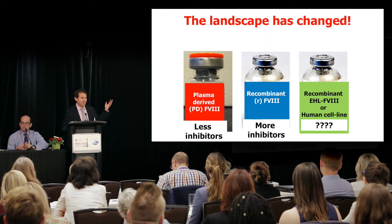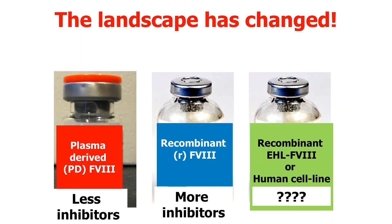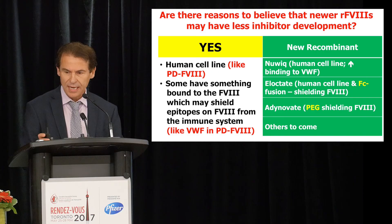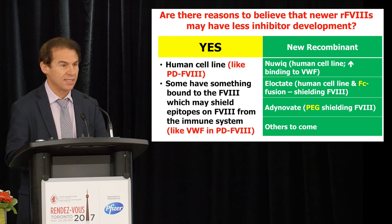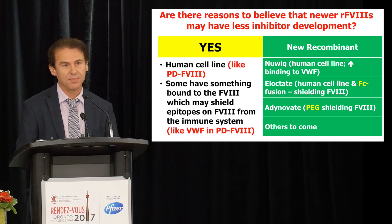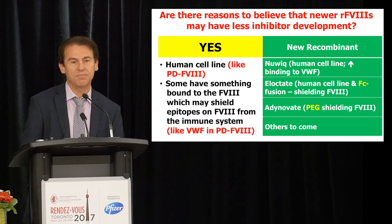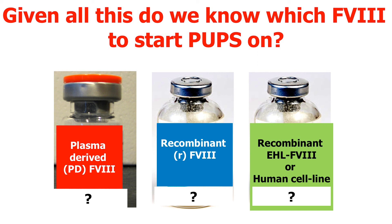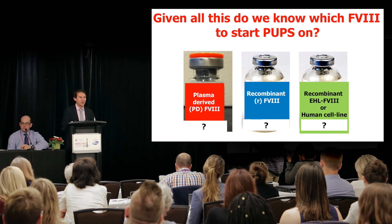On top of that, the landscape has changed. There are now newer products — recombinant extended half-life factor VIII and human cell line-derived factor VIII. Some of these are human cell line-derived, much like plasma-derived is made in humans. Some have something bound to the factor VIII which may shield epitopes from the immune system, much like von Willebrand factor does in plasma-derived factor VIII. So there is reason to think these might have less inhibitor development. We're still in a bit of a pickle in that among these three options, we still don't really know which one to start on.